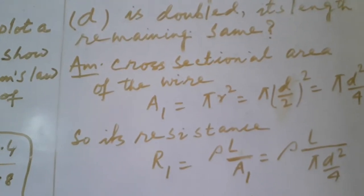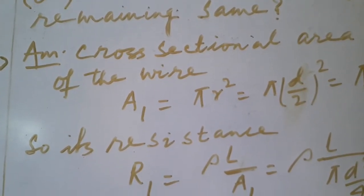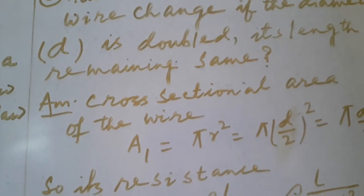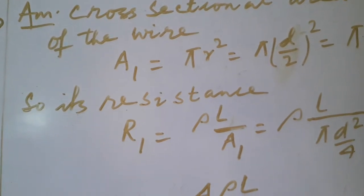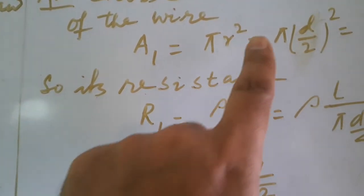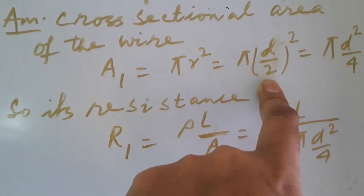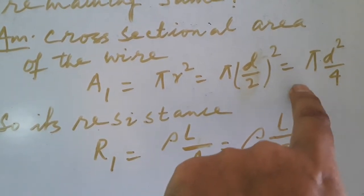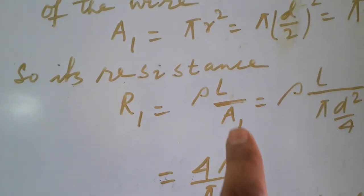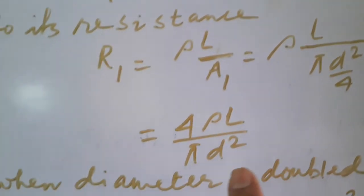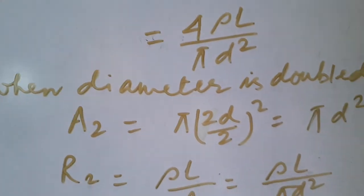Dear students, in this problem we have to show how resistance changes when diameter is doubled. When diameter is D, then what is the area? Area is pi R square which is further written as pi D square by 4 because radius is half of diameter. You are getting area in the first case and resistance in the first case will be rho L by A1. Putting the value of A1, get the value of R1 in this form. Now when diameter is doubled, then you simply put the value of D equal to 2D.